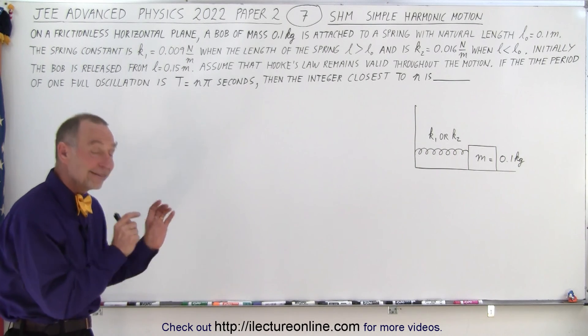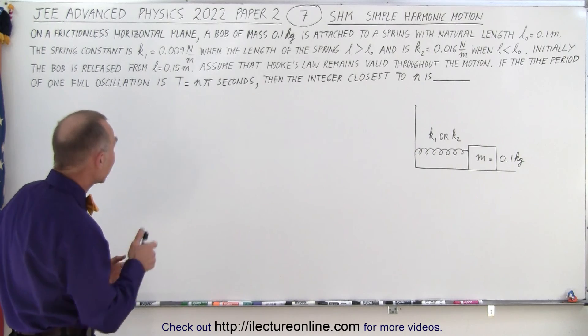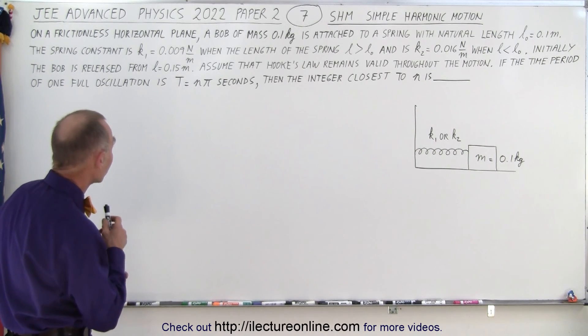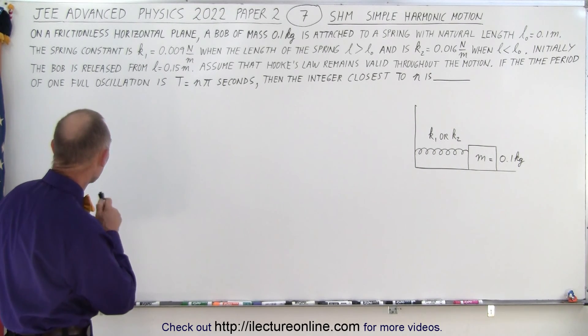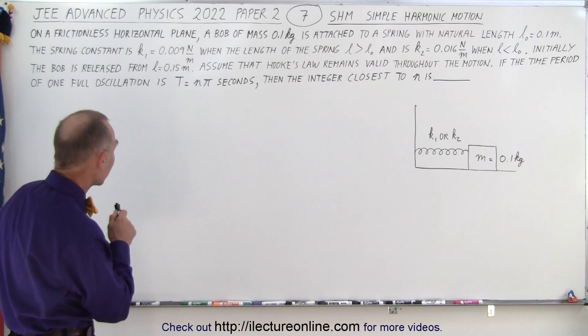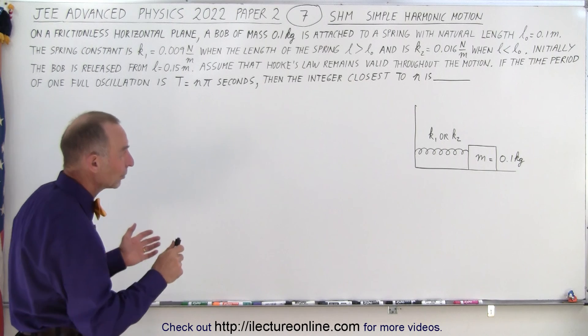So the spring constant is different depending upon if it's elongated or compressed. Initially the bob is released from l equals 0.15 meters. Assume that Hooke's law remains valid throughout the motion. If the time period of one full oscillation is described as t equals n times pi seconds then the integer closer to n is.